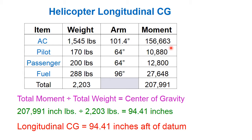We will perform the longitudinal center of gravity check for this helicopter just like we would for an airplane. We will complete an item, weight, arm, and moment chart, filling in the aircraft, pilot, passenger, and fuel with their corresponding weights and distances from the datum. We will calculate a moment for each item, then total our moments for a total moment, sum our weights for a total weight, and divide total moment by total weight to get our center of gravity along the longitudinal axis in inches from datum. In this example, that works out to be 94.41 inches aft of the datum.